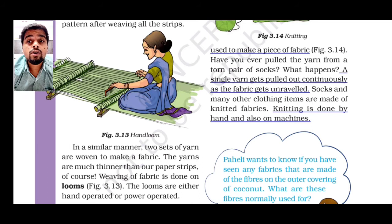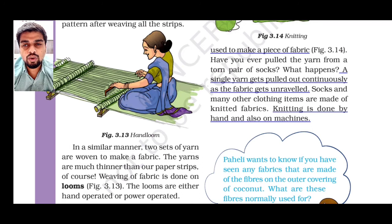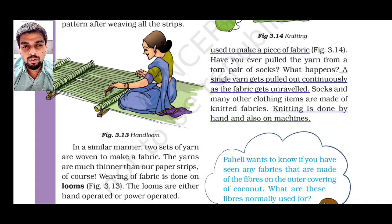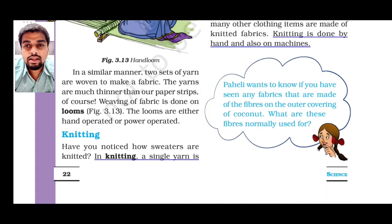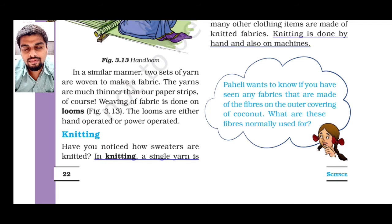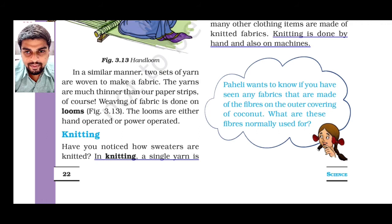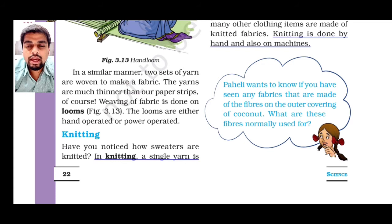So we have finished the process of weaving, in which two sets of yarns are arranged together to make a fabric and the device used is a loom. Now let's study the last process by which we can convert yarns into fabric. Knitting is the process in which a single yarn is used to make a fabric.